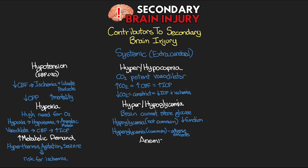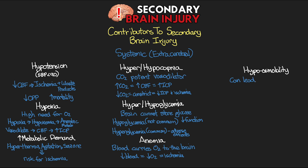The next contributor is anemia. We know that blood carries oxygen to the brain, so a decrease in the blood or hemoglobin available means less oxygen available to the brain, which can lead to ischemia. Next, hypoosmolality — in its most basic form, this is where the blood has too much fluid relative to other molecules and particles that exhibit osmotic pressure. This can lead to cerebral edema as fluid shifts out of the vasculature into the brain tissue.